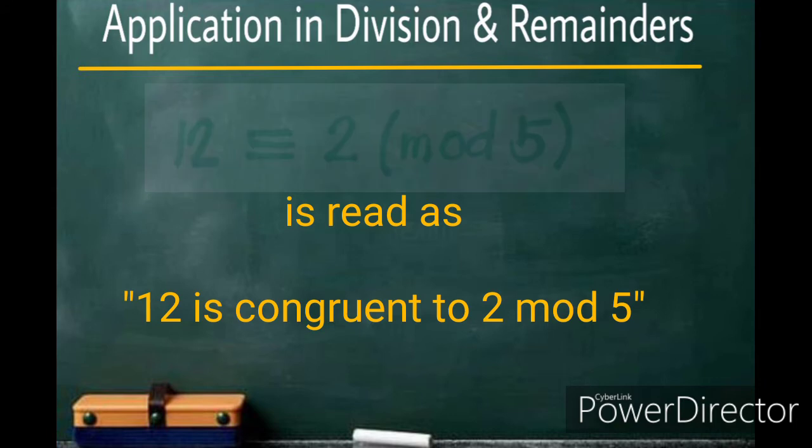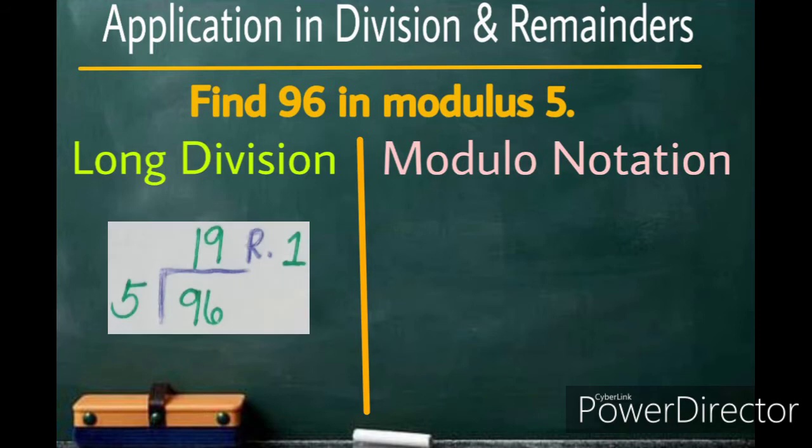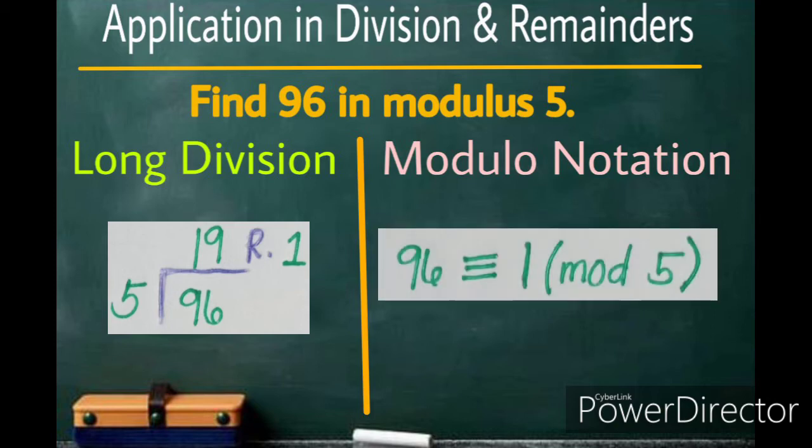Now, let's try another example. Find 96 in Modulus 5. By using long division method, we can say that 96 has a remainder of 1 when divided by 5. And therefore, we can also express that in Modular Notation as 96 is congruent to 1 mod 5.